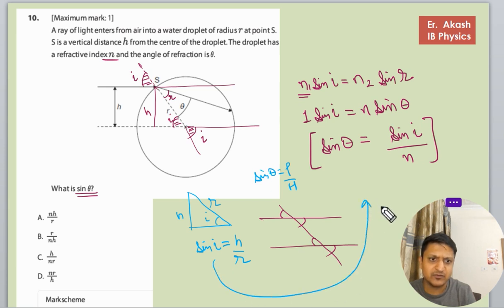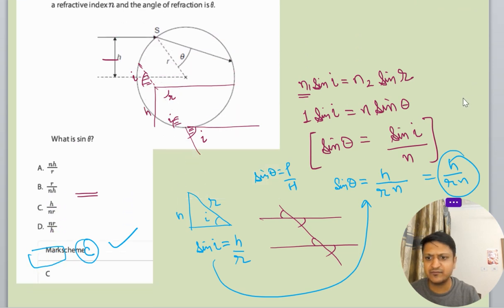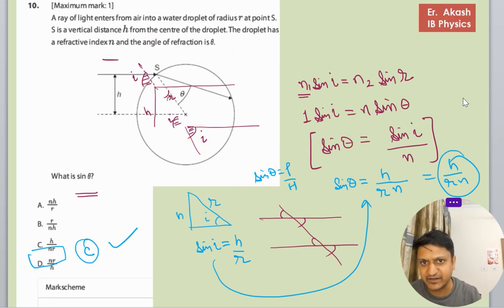We will use this into the previous equation. Sine theta will become sine i, which is h upon r, divided by n. So the answer will be h by rn, which is option C. Now we will check the mark scheme. C is the right answer.